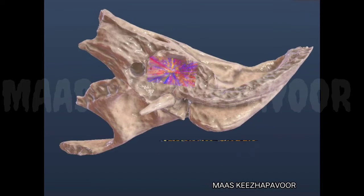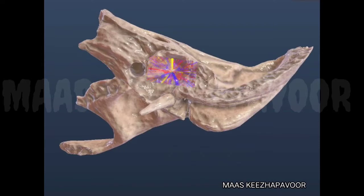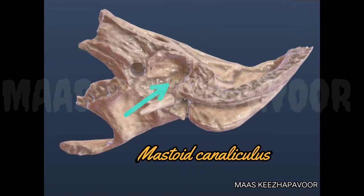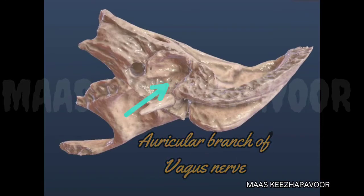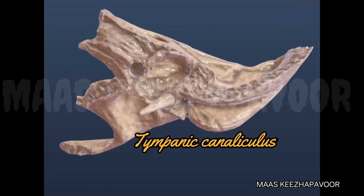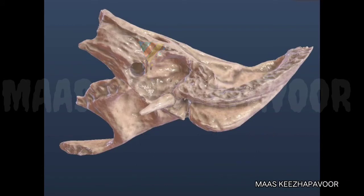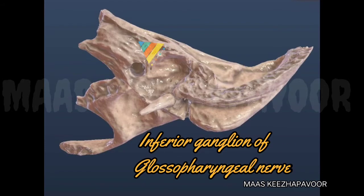Lateral to this, the carotid canal is seen, transmitting the internal carotid artery along with the sympathetic plexus. Lateral to the carotid canal is the jugular fossa, which lodges the superior bulb of the internal jugular vein. In the lateral wall of the jugular fossa, the mastoid canaliculus is present, transmitting the auricular branch of the vagus nerve. Between the carotid canal and jugular fossa, the tympanic canaliculus is present, transmitting the tympanic branch of the glossopharyngeal nerve.